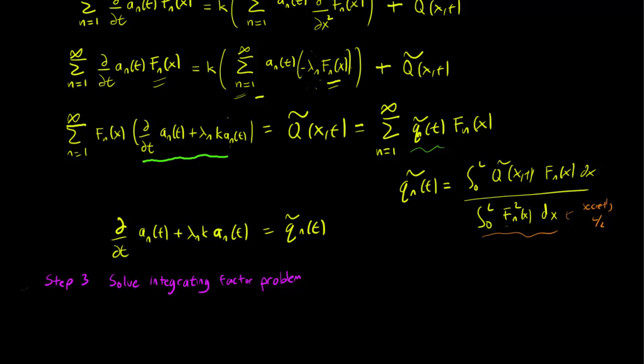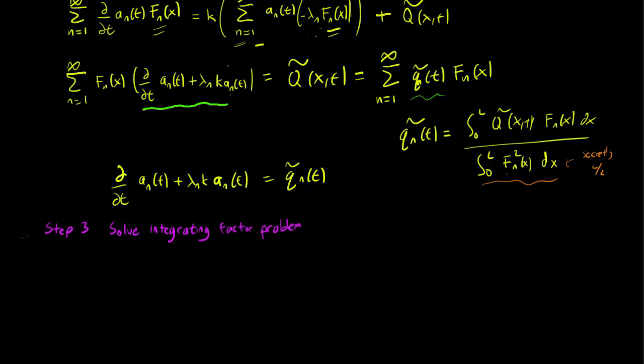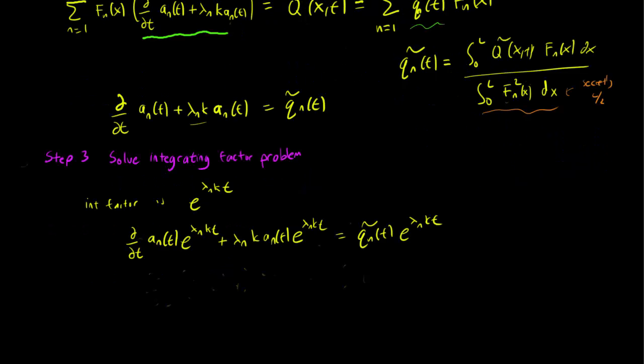Step 3 is to solve this integrating factor problem. And this goes back to ODEs. We know here that since we have a lambda_n*K over here, that our integrating factor is e^(lambda_n*K*t).